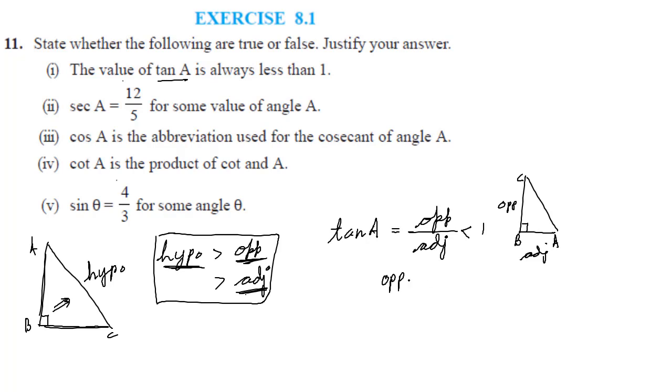That means if I consider this to be a true statement then opposite side is always less than adjacent side. Now is this true? Is it true that opposite side is always less than the adjacent side? No. Opposite side can be greater than adjacent side also. It can be less than adjacent side also. But if we are talking about hypotenuse, hypotenuse is always the longest side in the right angle triangle. But out of adjacent and opposite, any one can be greater, any one can be lesser.